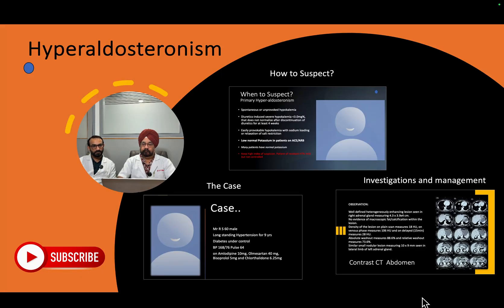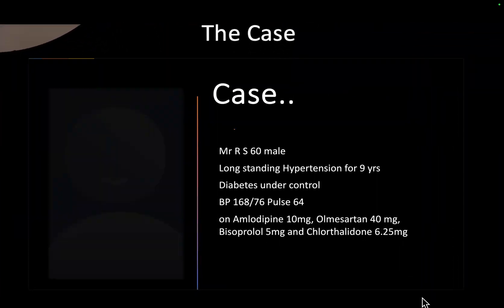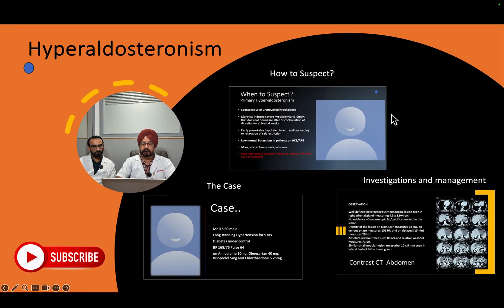Hyperaldosteronism is not a rare disease — it is a very common cause of secondary hypertension that is often missed. Today I am going to discuss a case, how to suspect it, how to confirm it by testing, and what the treatment is.